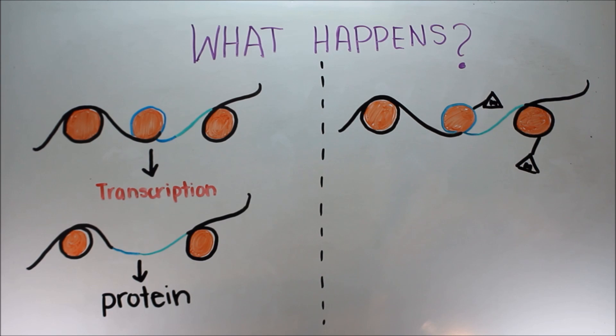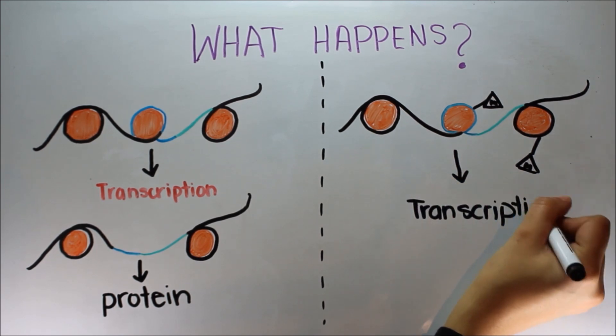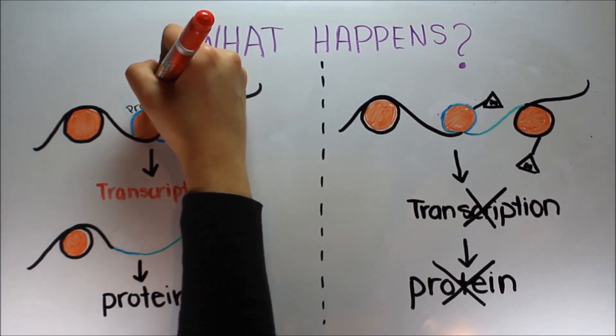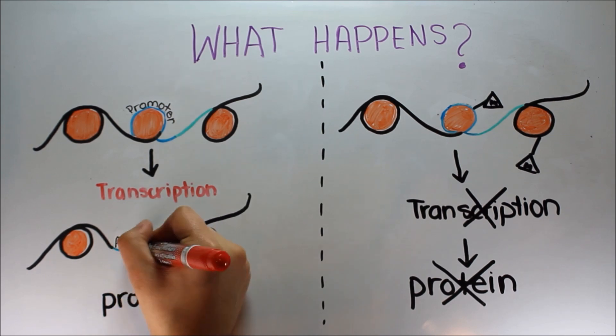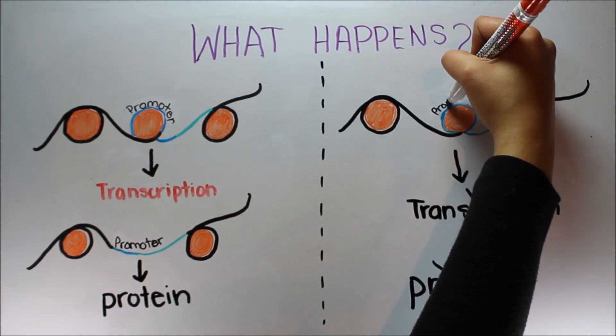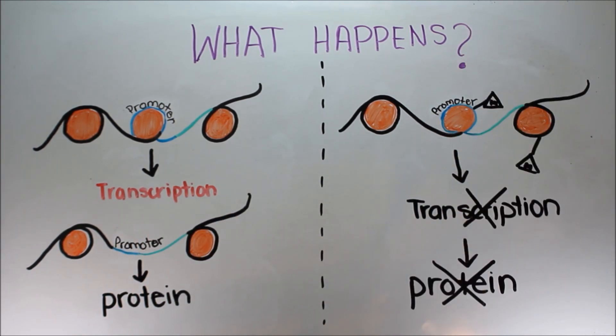Specifically, methyl groups target CPG islands, attaching to a cytidine residue. This stuff is fascinating. Methylation can silence the gene by hiding the promoter sequence, preventing the binding of RNA polymerase and eliminating transcription frequency. It can also cause overexpression of a certain gene, leading to a phenotype that shouldn't be seen.